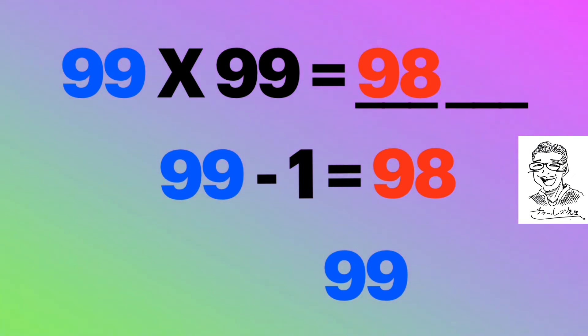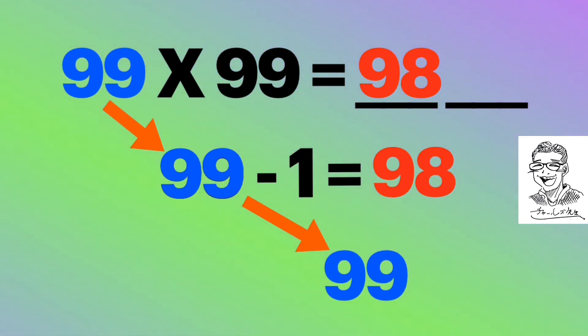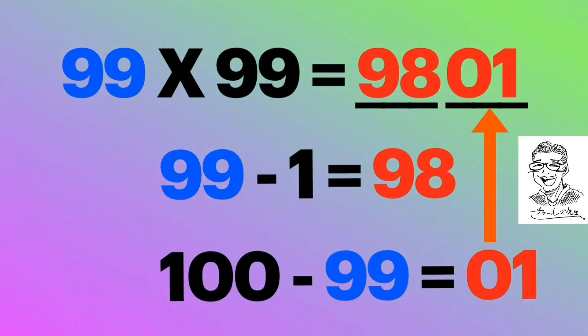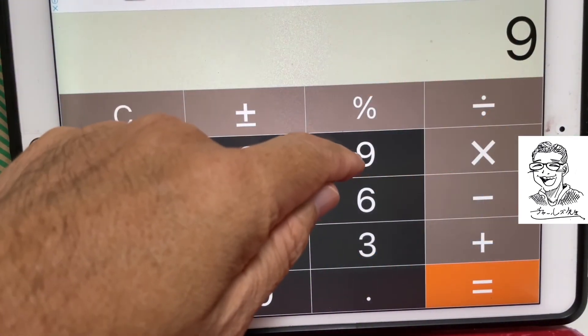And then 100 minus 99 equals 1, or 01. Those are the last two digits. 9801.